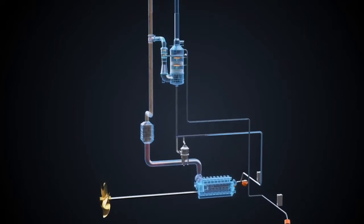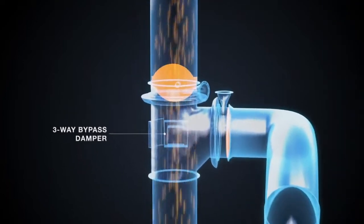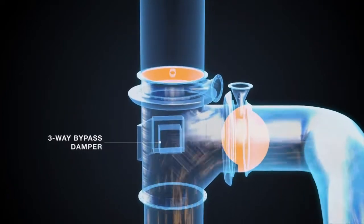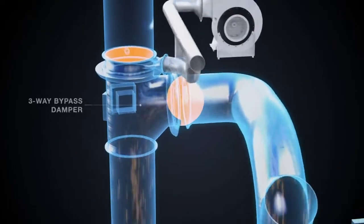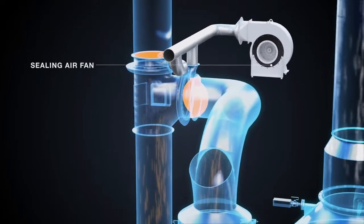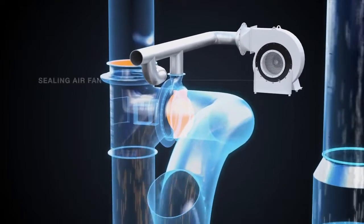Each of the combustion unit's exhaust pipes is equipped with a three-way bypass damper, ensuring that exhaust gas is safely routed either through the scrubber or to the atmosphere. This allows independent operation of each combustion unit. When needed, a sealing air fan supplies required sealing air to the bypass dampers.